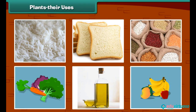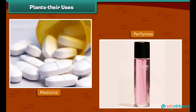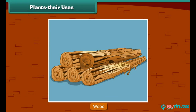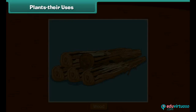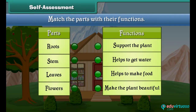Besides food items, we also get many other things from plants. Many medicines and perfumes are made from plants. Plants also give us wood — in some places, houses are made of wood. Now let's check your understanding: match the parts of plants with their functions.